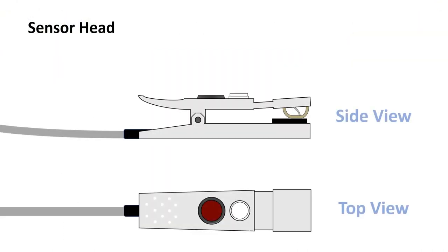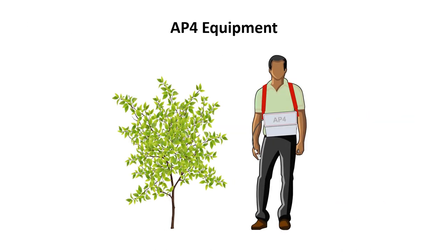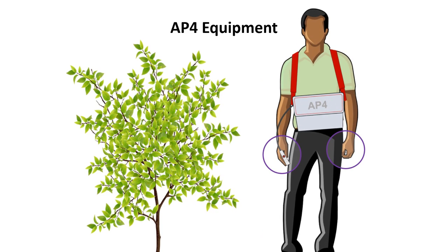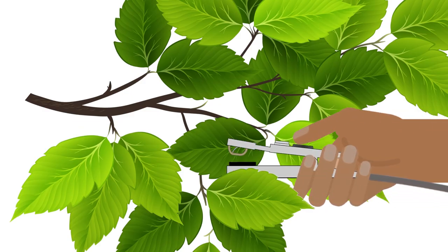On the upper surface of the sensor head lies the main control button and a small light sensor used to assess light conditions at the time of measurement. The AP4 body straps comfortably to the user, freeing up their hands to position and operate the sensor head amongst leaves.